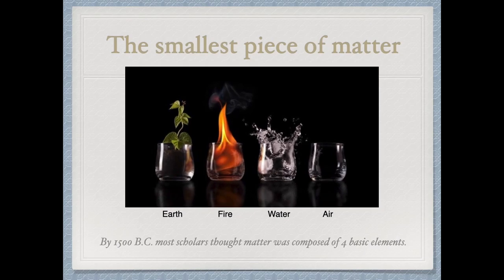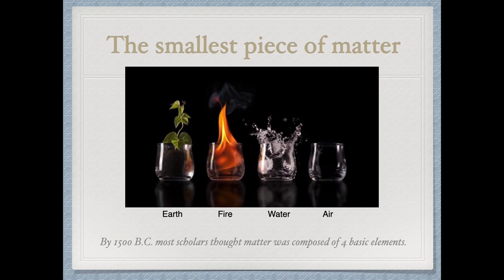Let's take a look at what the smallest piece of matter is — a question philosophers have grappled with since forever. The ancient Chinese philosophers thought there were four main constituents of the universe: earth, fire, water, and air. We all know today this is not right, though it keeps making a resurgence. These aren't fundamental constituents of matter, but you can see why ancient peoples thought they were important. This goes back to around 1500 BC.